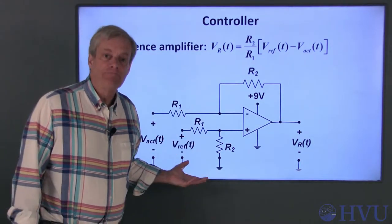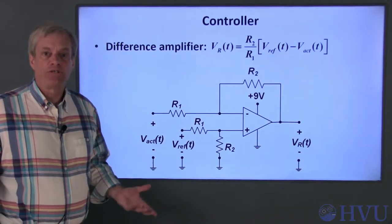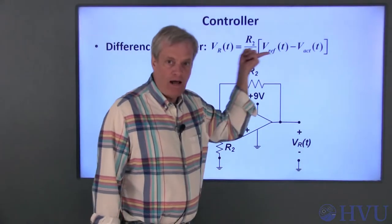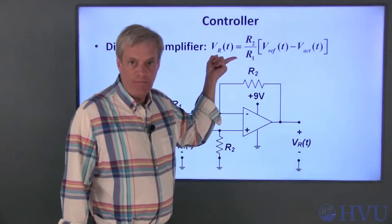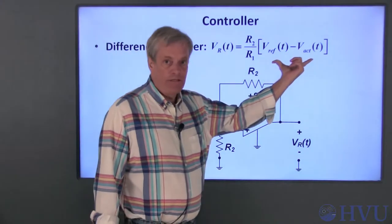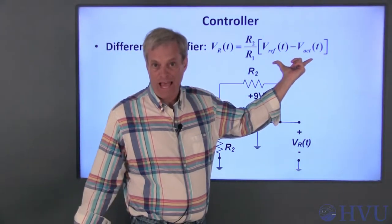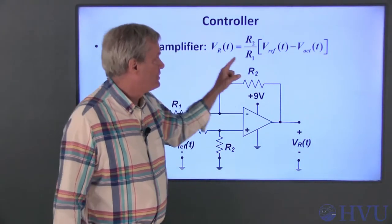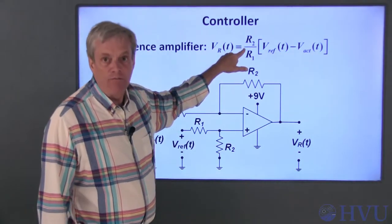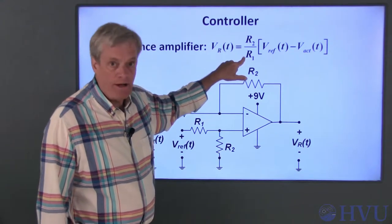Mathematically modeling this as a linear circuit leads to this input-output relationship. The output is the difference between the two inputs, Vref minus Vact, multiplied by a gain, which is the ratio of R2 to R1.